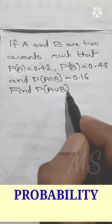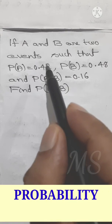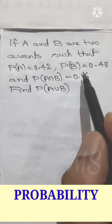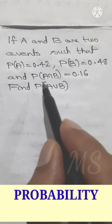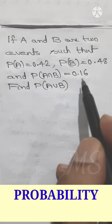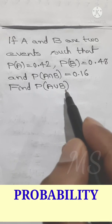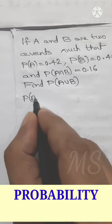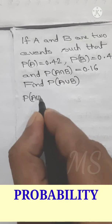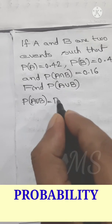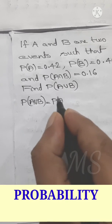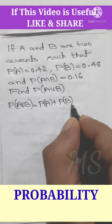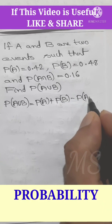find P of A union B. A and B are two events such that P of A union B equal to P of A plus P of B minus P of A intersection B.